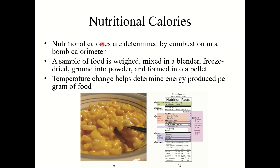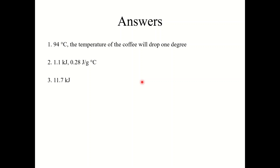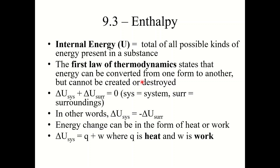Nutritional calories are often determined by combustion in a bomb calorimeter. Anytime you buy processed food, they take a sample, weigh it, mix it in a blender, freeze dry it, grind it into a powder, form it into a pellet, and stick it inside a bomb calorimeter. The temperature change helps determine the energy produced per gram of food. Here are three practice problems for you to try. Pause the video, give these an attempt to see if you understand the material, then move on to the next slide which has the answers. That concludes section 9.2. See you in the next video for section 9.3, enthalpy.